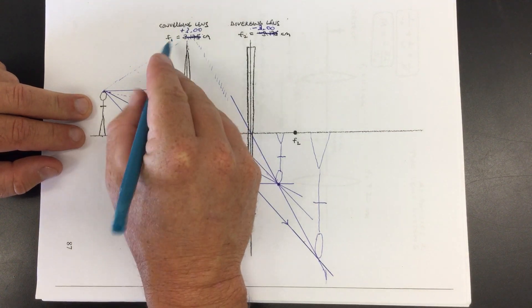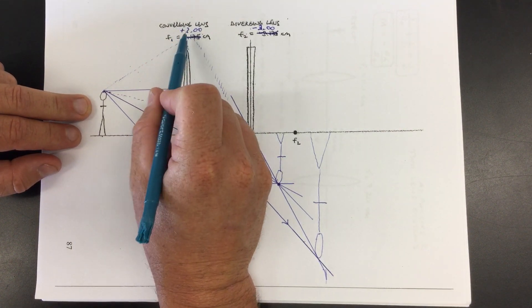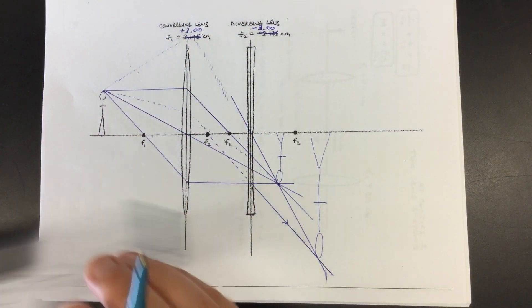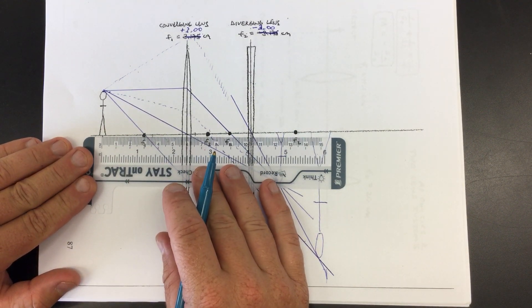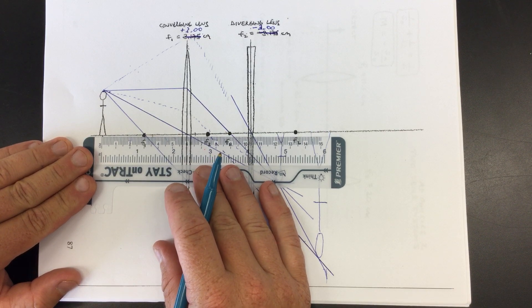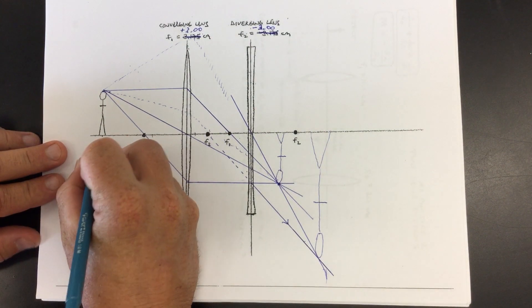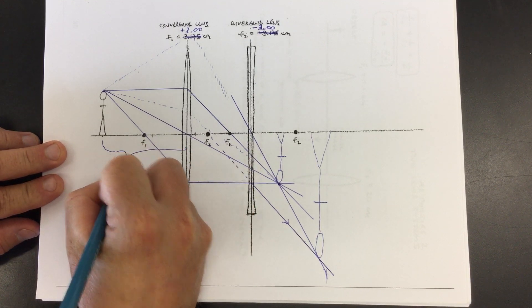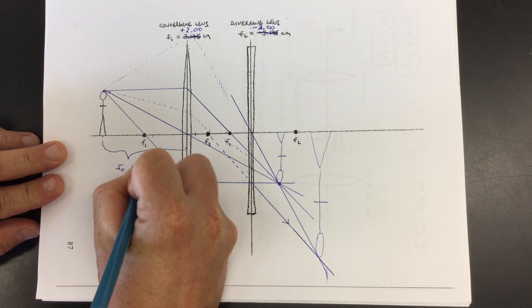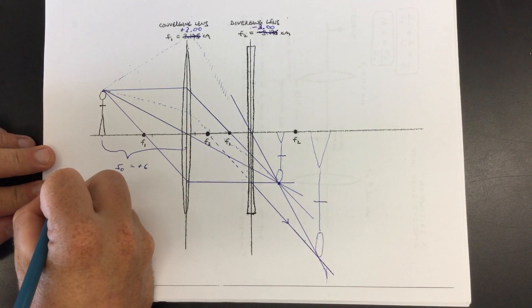So here's the first lens that we've got a focal length of plus three. We've got an object distance that we need to measure because we have to know where we put an object. And it looks like this is six again. Yeah, let's use six. So our SO for the first lens, it's going to be positive six. So let's go for it.